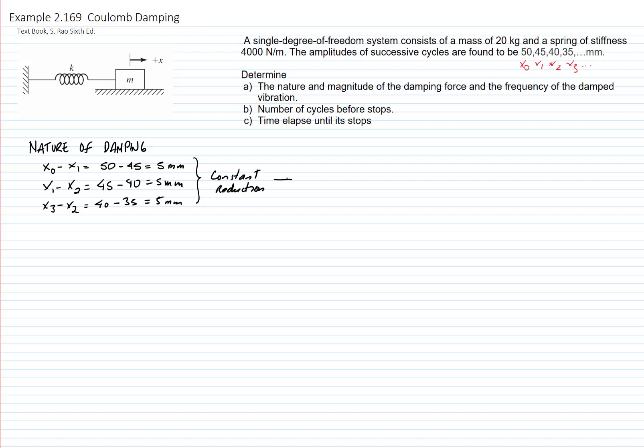Therefore, we can conclude that the damping is dry friction or coulomb damping. Remember that if we compare this to viscous damping, the viscous damping system has a reduction in amplitude which is exponential.